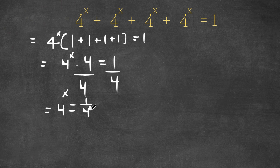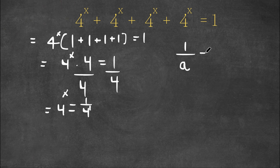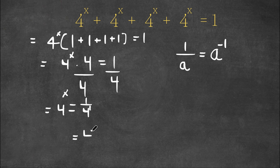This is actually 1 over 4 to the power of 1, and we want to convert this into the form 4 to the power of a number. Well, 1 over any number — so let's say we have 1 over a — this is the same thing as a to the power of negative 1. It simply changes the exponent to a negative. So doing the same thing with 1 over 4 to the power of 1, this would equal 4 to the power of negative 1.